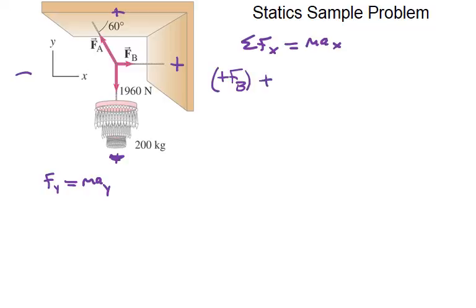Positive FB plus, if we look at this here, we have FA. We are going to have to break it down into X and Y components. So we have FA in the X, which is in the negative, so negative FAX. And then that all balances out to be zero.